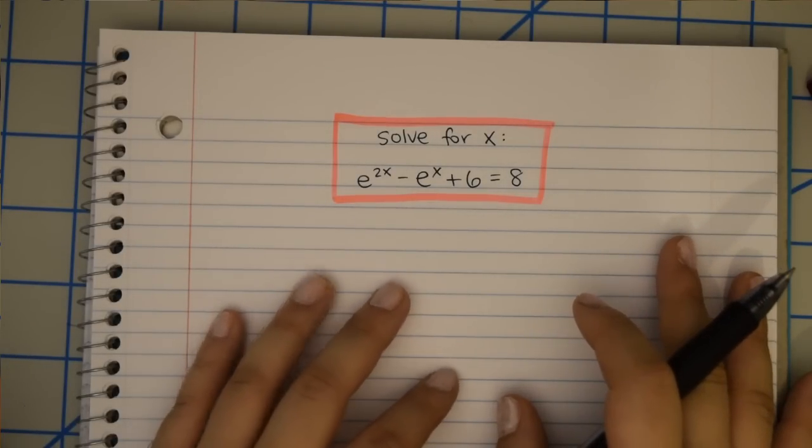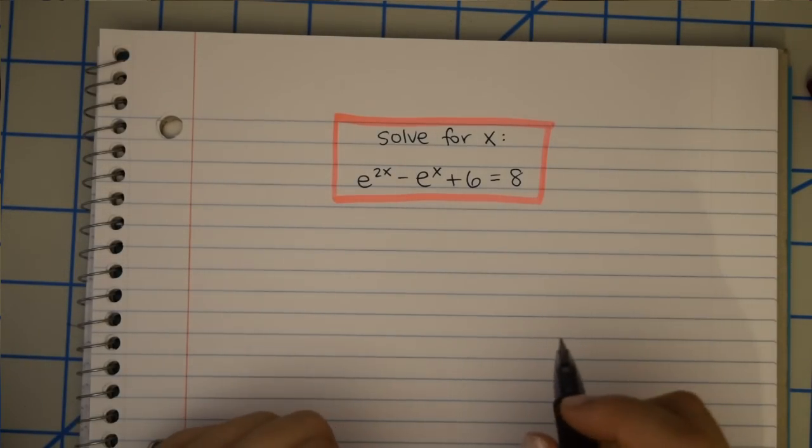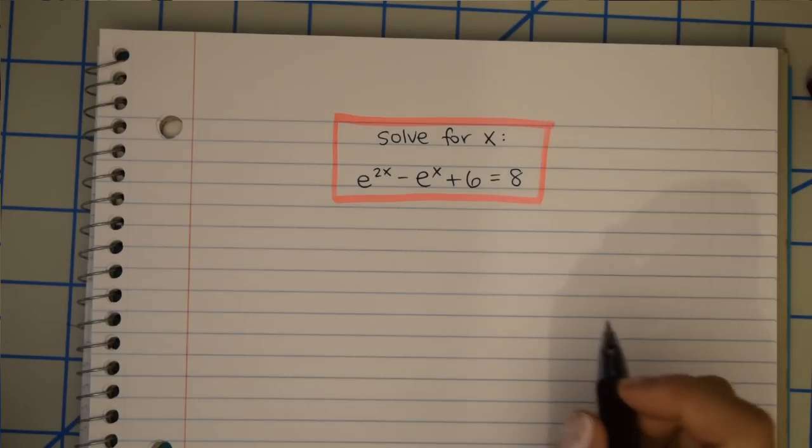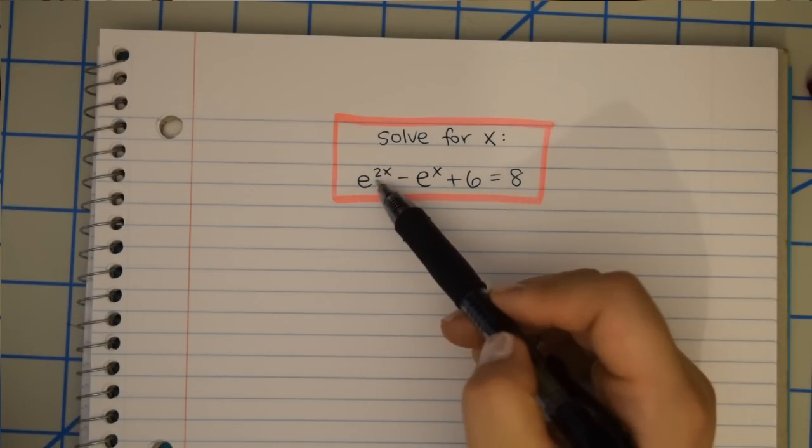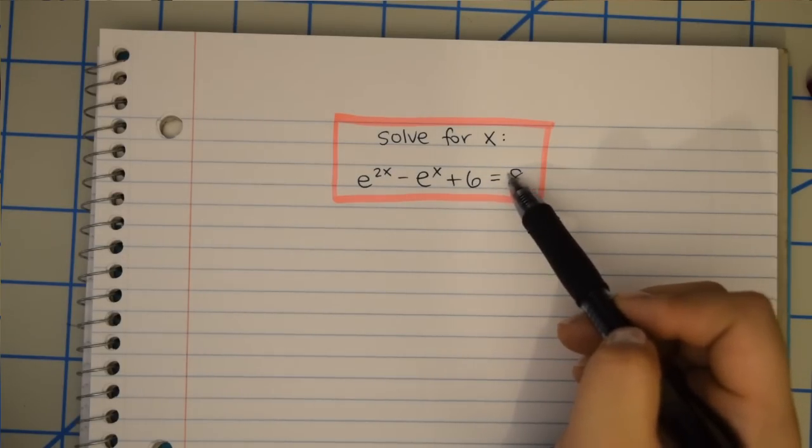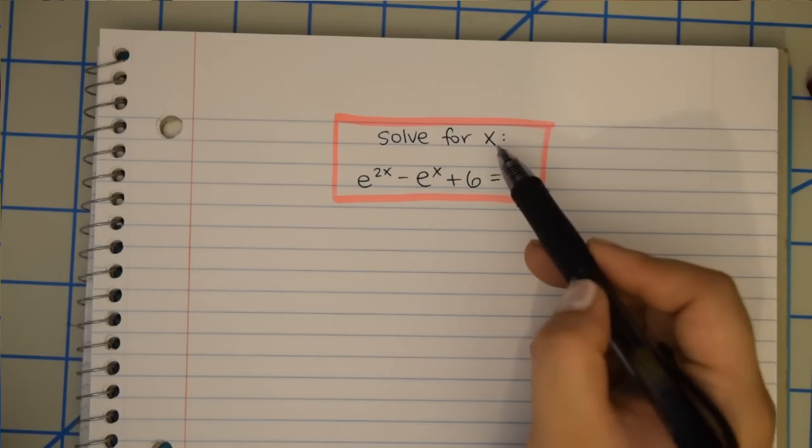Hello, welcome. How are you doing? Good? That's good. I thought that we could work through this problem together. e to the 2x minus e to the x plus 6 equals 8. And our goal is to solve for x.